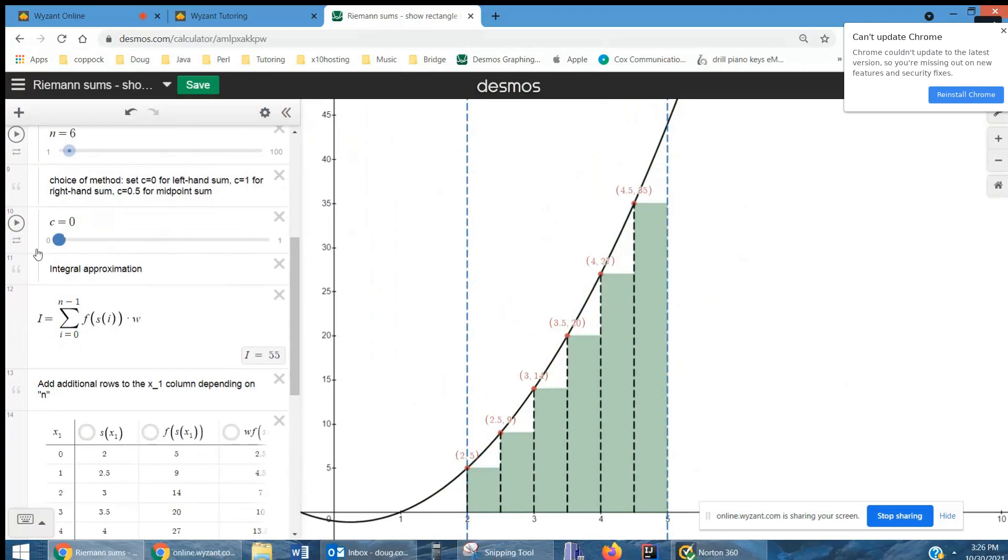And I'll leave it at left-hand endpoints. This i equals the sum from i equals 0 to n minus 1 of f of s sub i times w. That's actually the sum of the areas of all these rectangles, where s sub i is each endpoint. f of s sub i is the height, and w is the width.